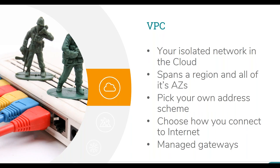A public subnet can be routed to from the internet; private by definition cannot. You can pick your own address scheme — typically from a private address range — and I'd recommend not constraining yourself to the usual /24 networks of 256 addresses; you can go bigger. Networking is pretty familiar for the most part: you'll be building routing tables, though be careful with how you attach route tables and route precedence. We do also need to communicate with things outside of our private VPC bubble.